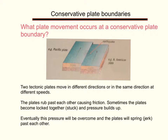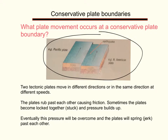The first focus is on what plate movement occurs at a conservative plate boundary. Here you can see in the diagram that we have two tectonic plates and they are moving in the same direction. But the speed at which they move is slightly different. So two tectonic plates move in different directions at different speeds, or it could be in the same direction at different speeds.